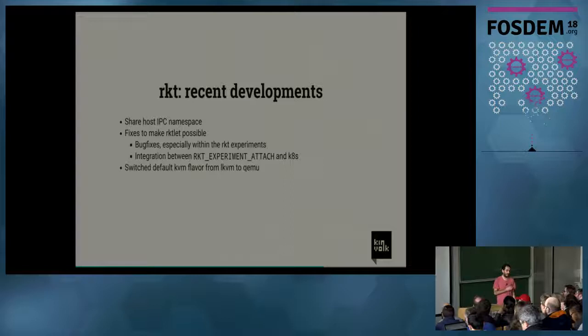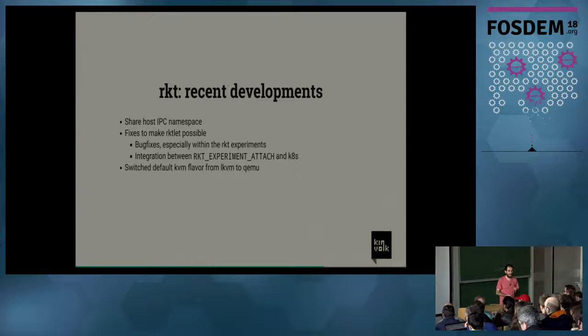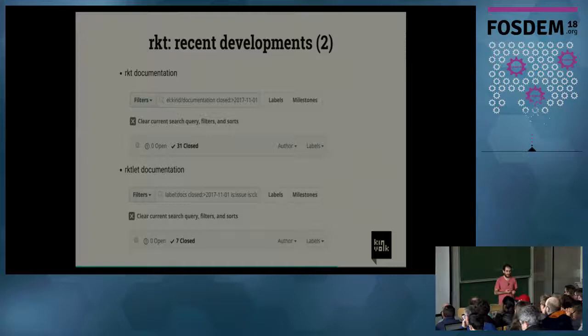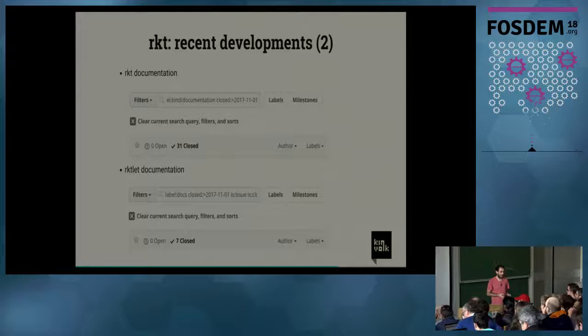We did a lot of fixes in Rocket to make RocketLib possible — many bug fixes on the app experiment — and we added integration between the attach experiment, the iottymux component, and Kubernetes. We also switched the default KVM flavor from LKVM to QEMU, because LKVM was unreliable and had problems with mounts. A recent development was documentation: thanks to the CNCF funding us, we closed 31 documentation issues after November of last year. The documentation state of Rocket is pretty good now, and we also added documentation to RocketLib.